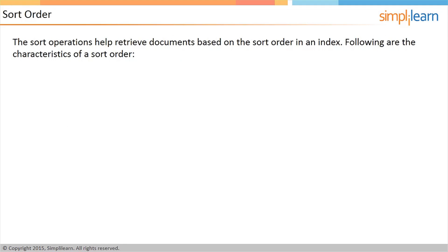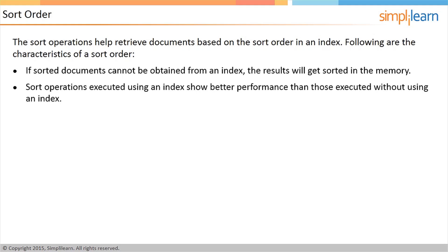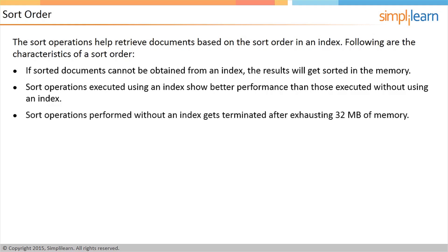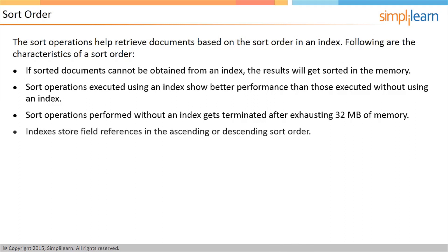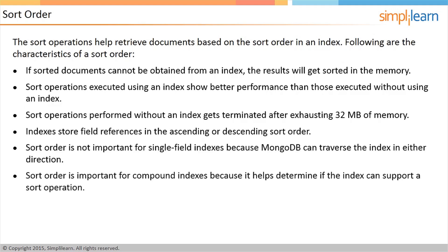In MongoDB, you can use sort operations to manage sort order and retrieve documents based on the sort order in an index. If documents cannot be retrieved sorted from an index, results will be sorted in memory. Sort operations executed using an index show better performance than those without an index. Sort operations performed without an index are terminated after exhausting 32 megabytes of memory. Indexes store field references in ascending or descending sort order. For single-field indexes, MongoDB can traverse the index in either direction, so sort order is not important. However, for compound indexes, sort order is important because it determines whether the index can support a sort operation.